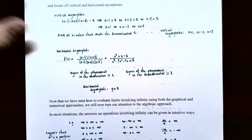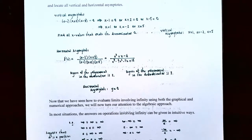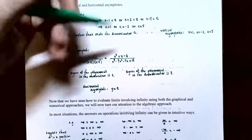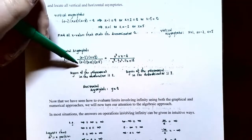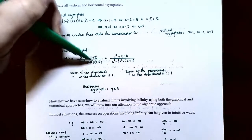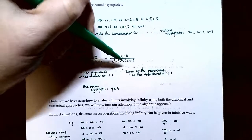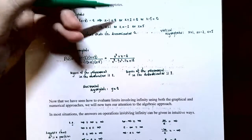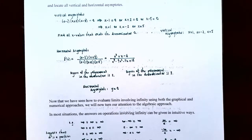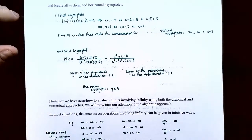To find the horizontal asymptote, determine the degrees of the numerator and denominator. Multiplying out the numerator gives x² + x − 6, degree two. Multiplying out the denominator gives x³ − 4x² − 7x + 10, degree three. Since the degree of the denominator is larger than the degree of the numerator, the horizontal asymptote is y equals zero — the x-axis — and the function approaches the x-axis on the far ends.